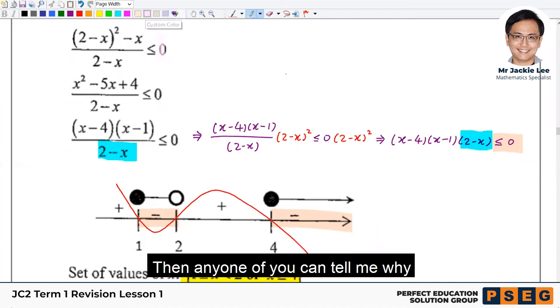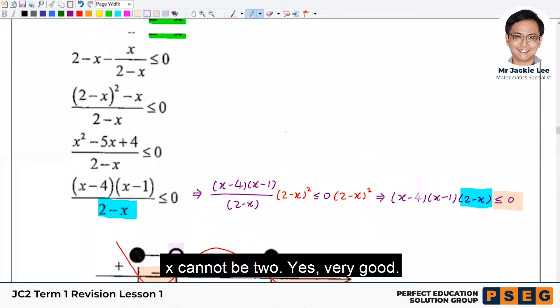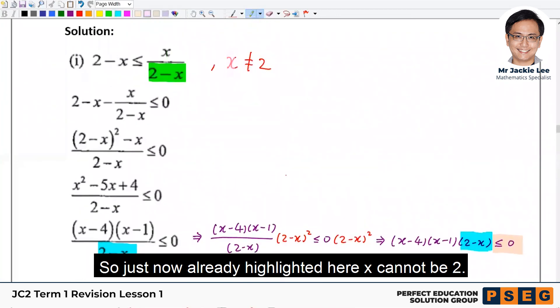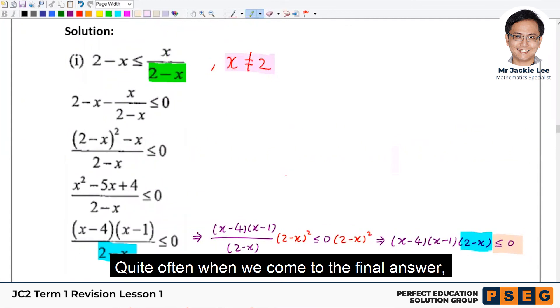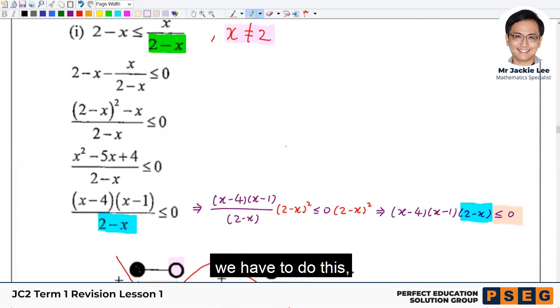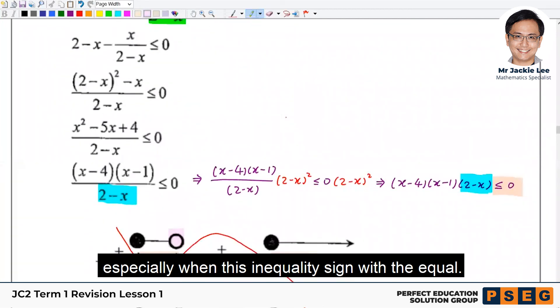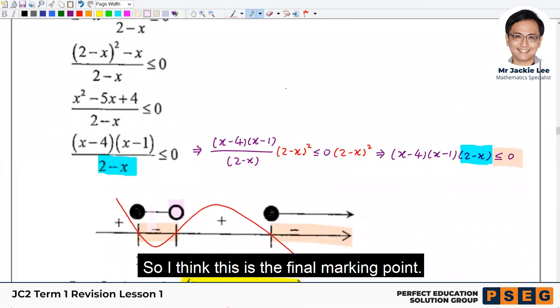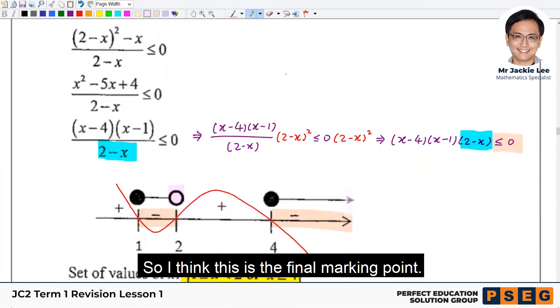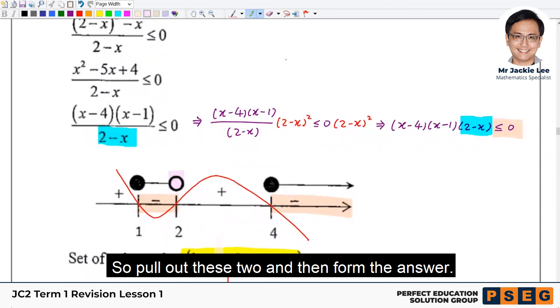Then, anyone of you can tell me why this one suddenly empty circle? Why? X cannot be 2. Why not? Yes, very good. So just as I already highlighted here, x cannot be 2. Quite often the answer will have, when it comes to the final answer, you have to do this. Especially when the inequality side with the equal. So this, I think it's the final marking point. So pull out these two and then form the answer.